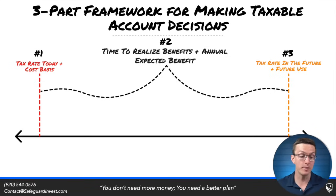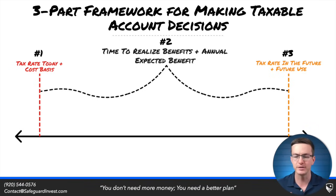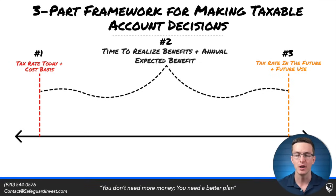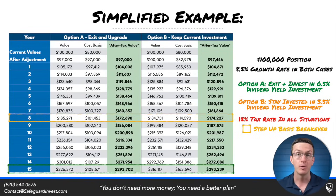Is this money that will be used for retirement, or is this money that will be passed on to the next generation and receive a step-up in basis? As we adjust each of these variables, know that the conclusion will change slightly. But rather than talking in complete theoretical terms, let's walk through an example.